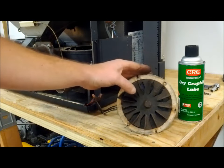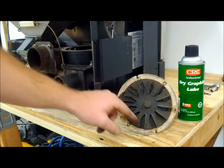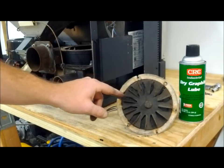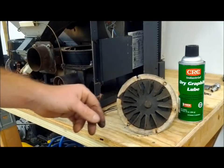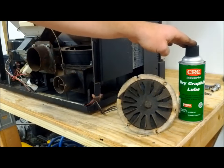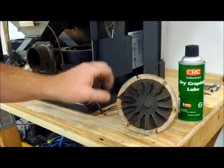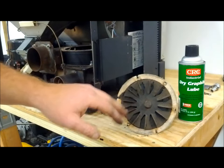We've got the exhaust fan out and on the bench. Next, take a wire brush and brush this wheel down to knock off all the soot. Use a shop vac to suck it up. Then spray it down with CRC graphite lube. That will fill in any little rust spots and pits to make them smooth so the soot won't adhere to it again.